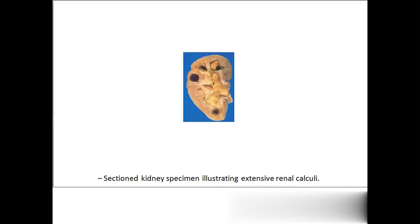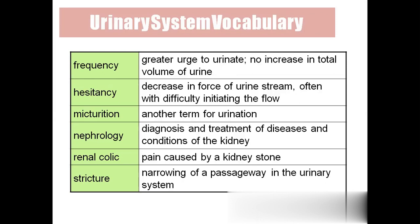Here we have a picture of renal calculi. The kidney stones are formed in the renal pelvis and calyx area, and also in the renal pyramids. Frequency means a greater urgency to urinate — the patient cannot control or hold the urine, though there is no increase in the total volume of urine.